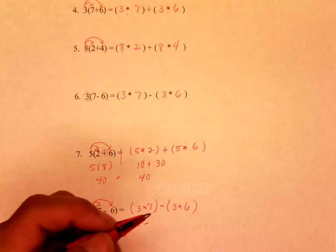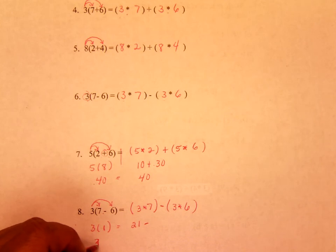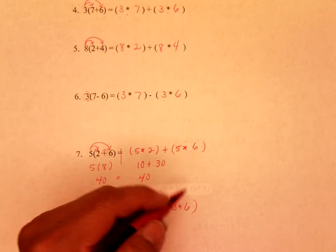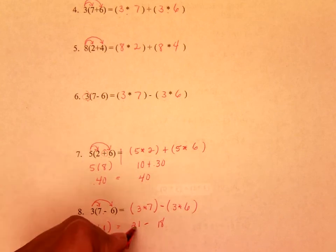sorry, 3 times 1 is 3. There's one mistake, okay? And 3 times 6 is 18, 21 minus 18 is 3, and you get the same answer.